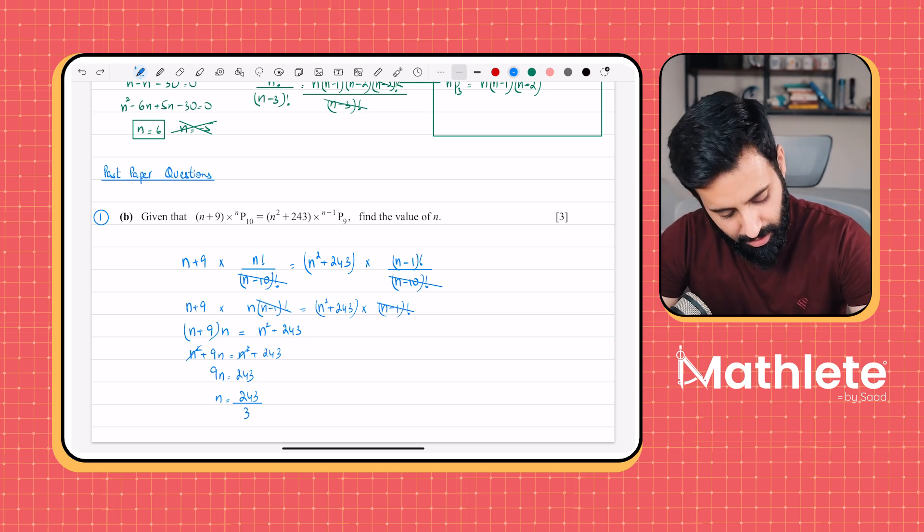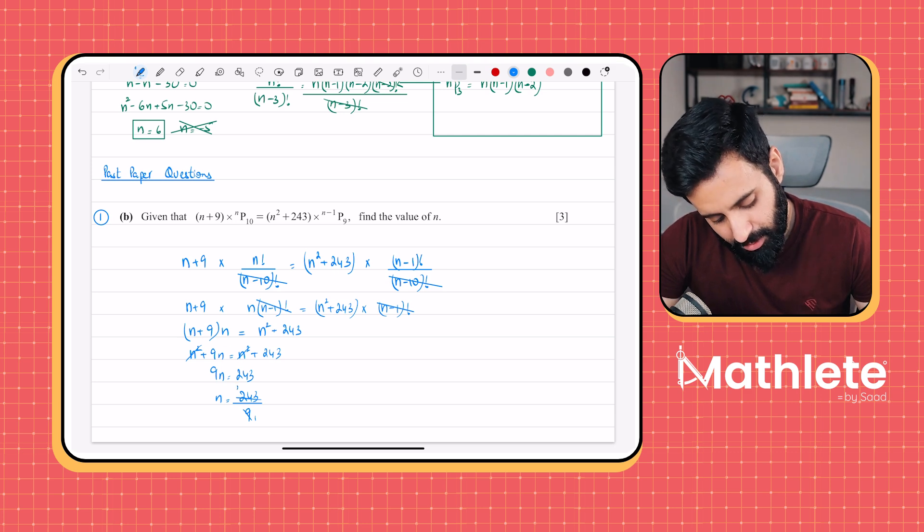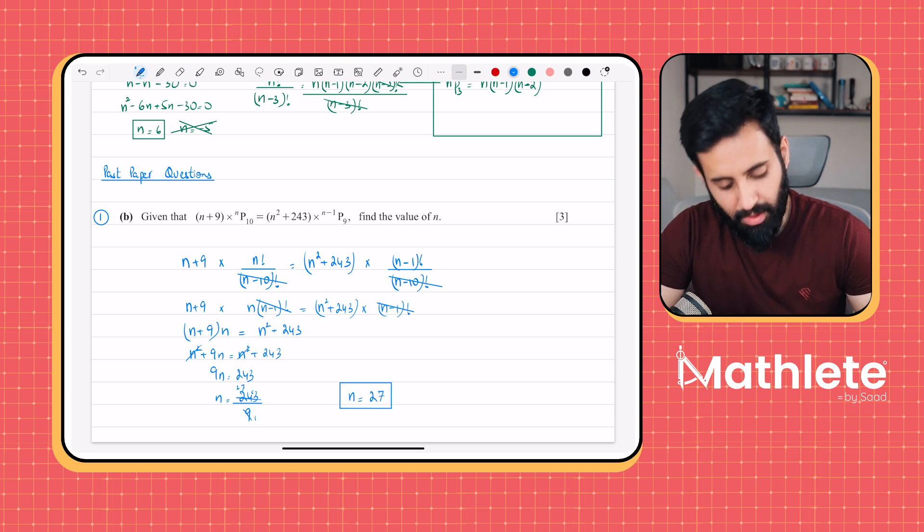And N is equals to 243 divided by 9. So let's work it out. 243 divided by 9. 9 ones are 9. 9 2s are 18. We're left with 6. 9 7s are 63. So that means N is equals to 27. That is in fact the correct answer.